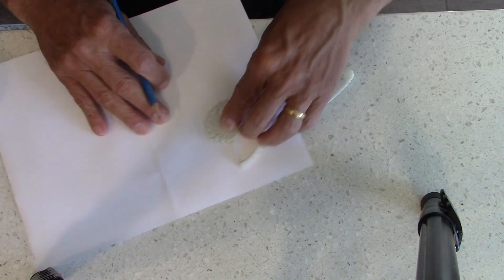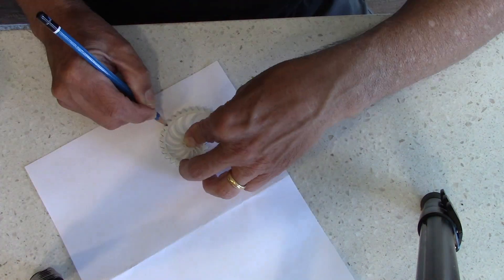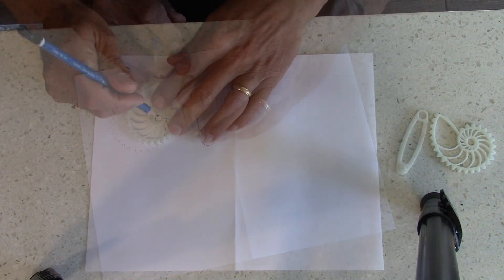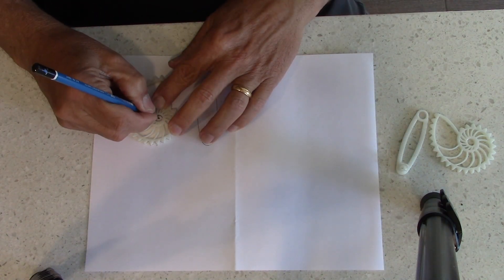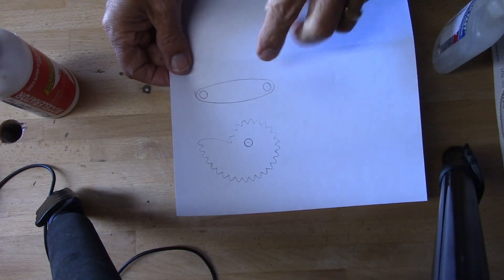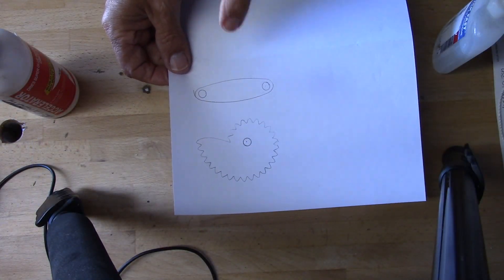So now I'm taking and very quickly I'm tracing around the pattern and then also the bracket. When that's done I'm going to make sure I get a good center spot where the bracket is held.